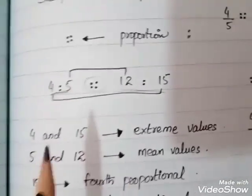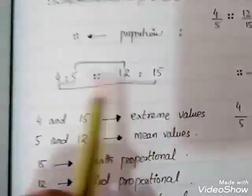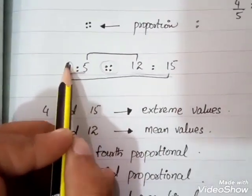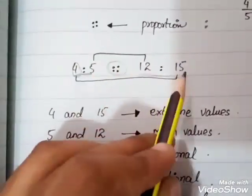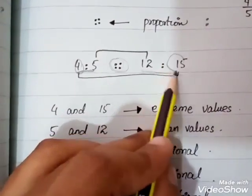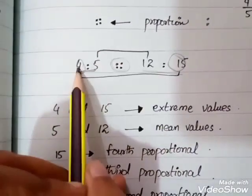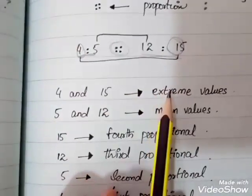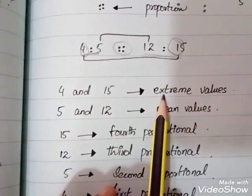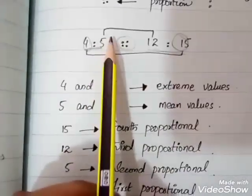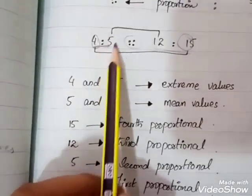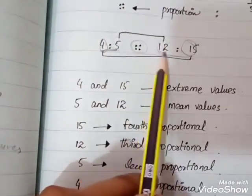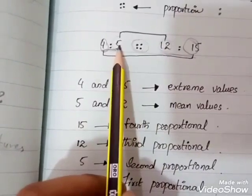Do you understand this? Now the first and last values are called extreme values, and the second and third values are called mean values.